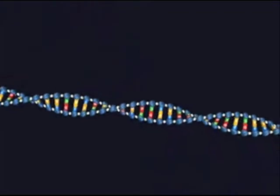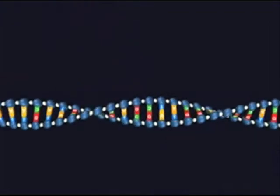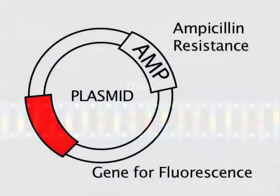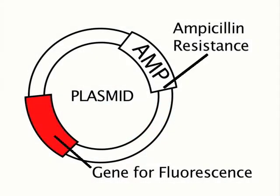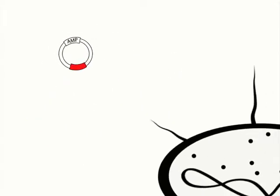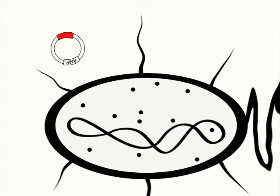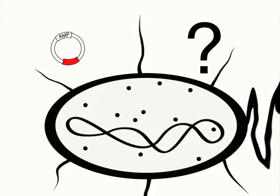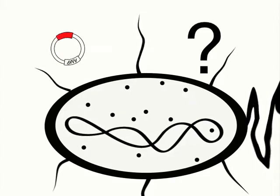BioBridge has prearranged the foreign DNA for you to work with into a plasmid vector. If you look closely, you can see that this plasmid contains the protein for fluorescence. This plasmid will be, to put it simply, inserted into its host bacterial cell. The question is: how do we insert it into this cell?